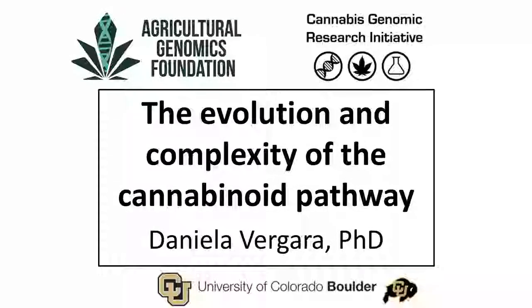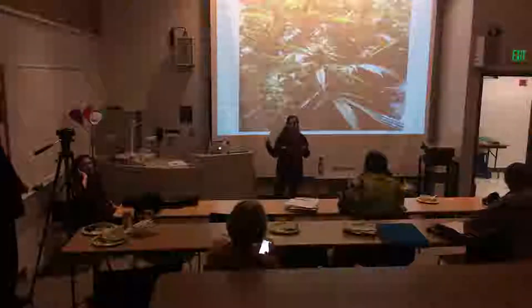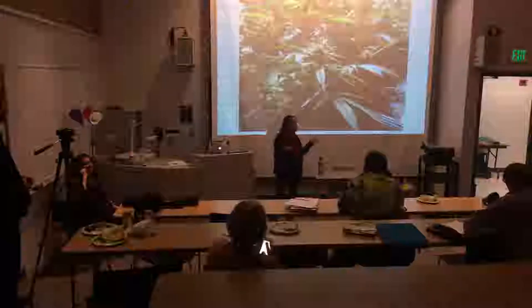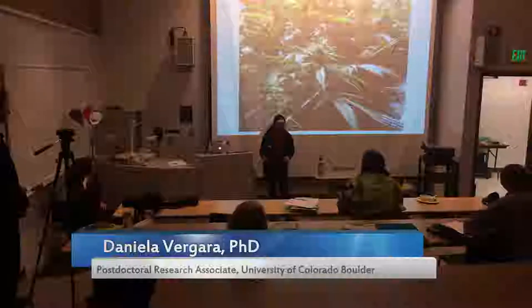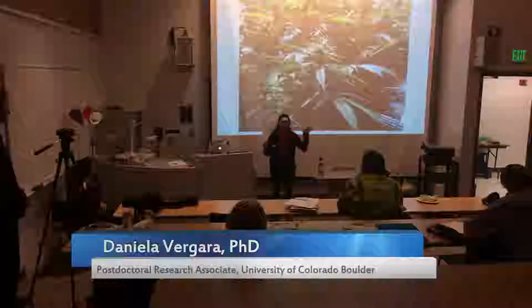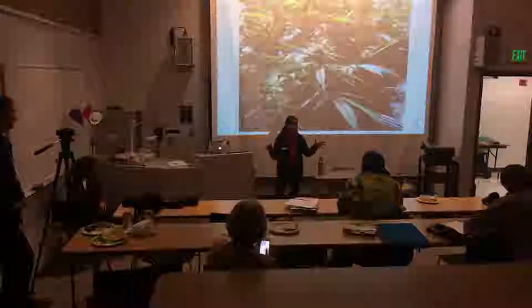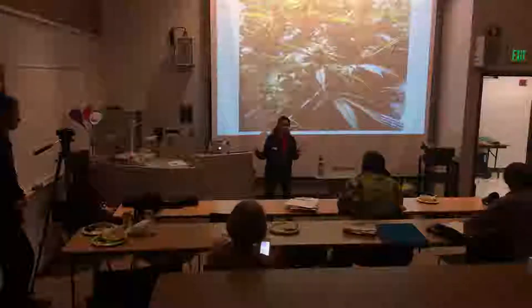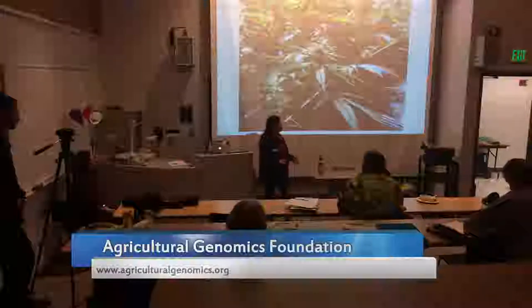Cannabis is a plant that is usually annual, so individuals live about a year. However, in tropical and subtropical climates, they live more than a year. It is wind-pollinated. It is dioecious, so males and females are in different plants. However, there are monoecious populations — hermaphrodites — that exist in natural populations.